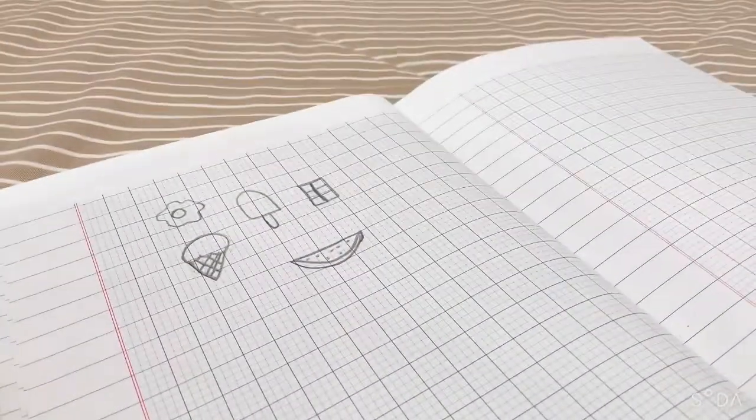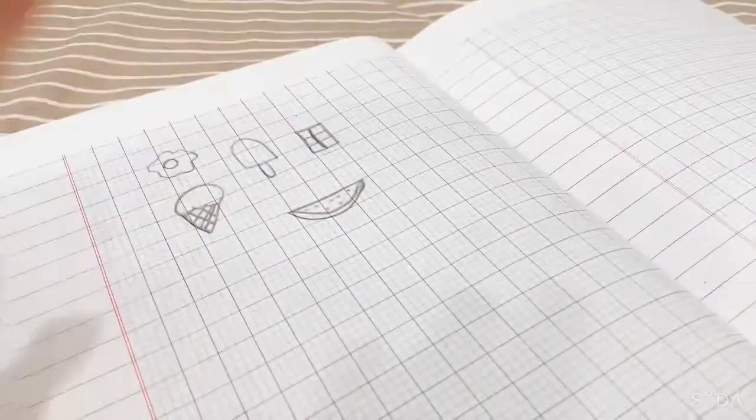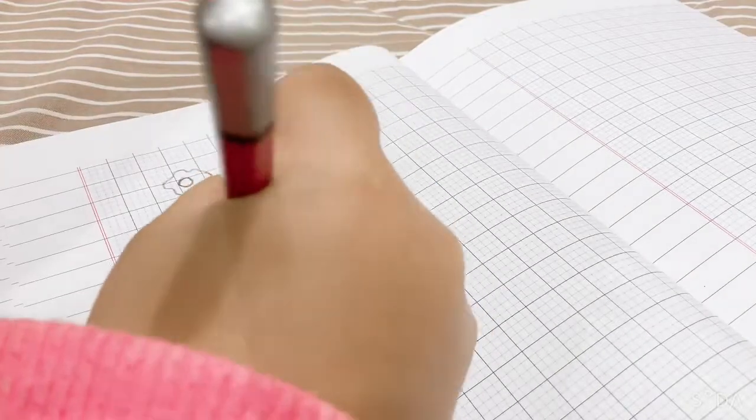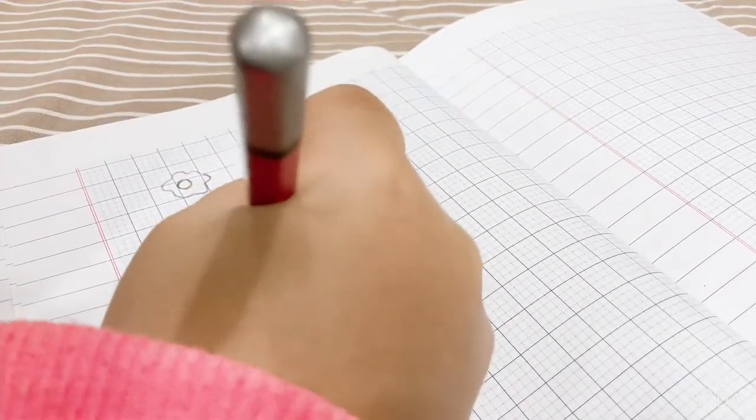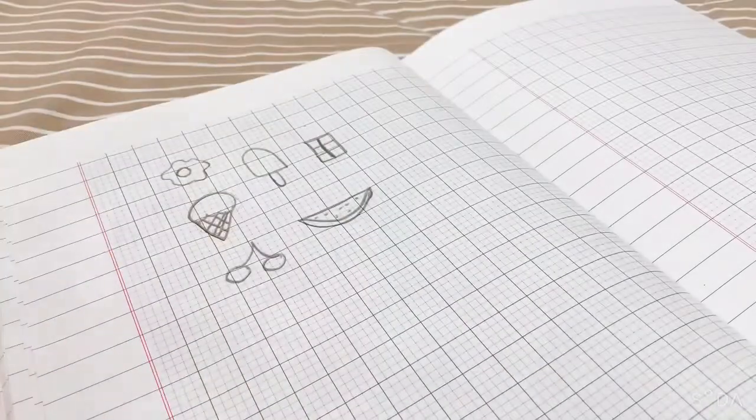Now I will draw a cherry. Oops, okay. Cherry: draw two circles, draw two circles, draw two circles. Then draw the line, draw the leaf.